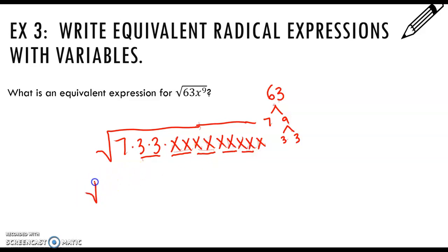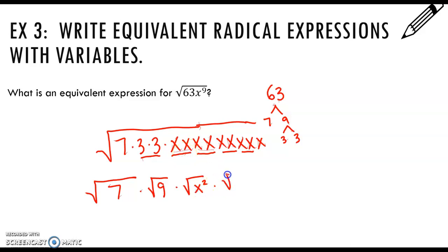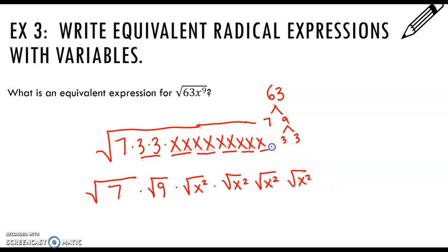If I rewrite this, I have the square root of 7 times the square root of 9, times the square root of x squared for each pair — square root of x squared, times square root of x squared, times square root of x squared, times square root of x squared — and then one x left over, so the square root of x.